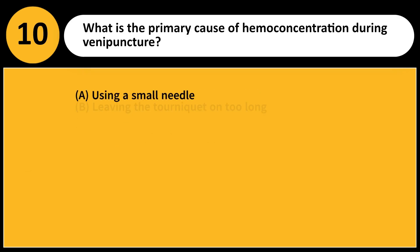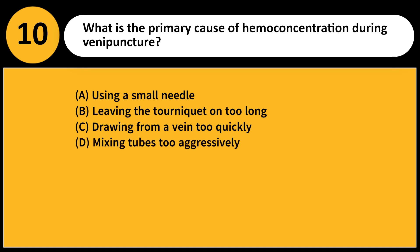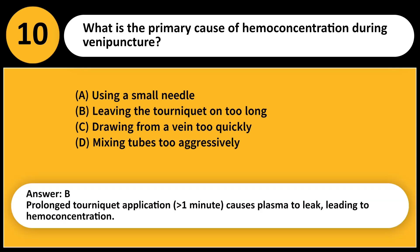What is the primary cause of hemoconcentration during venipuncture? A. Using a small needle. B. Leaving the tourniquet on too long. C. Drawing from a vein too quickly. D. Mixing tubes too aggressively. Answer: B. Prolonged tourniquet application (one minute) causes plasma to leak, leading to hemoconcentration.